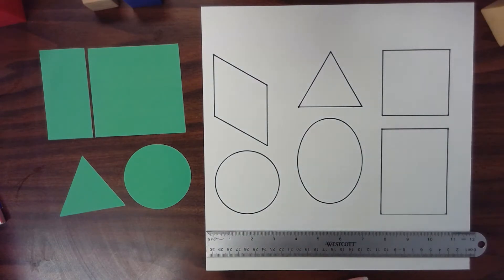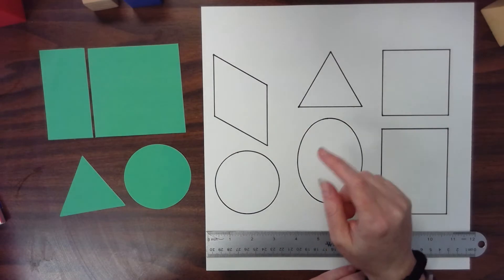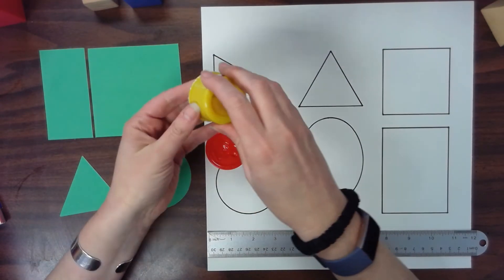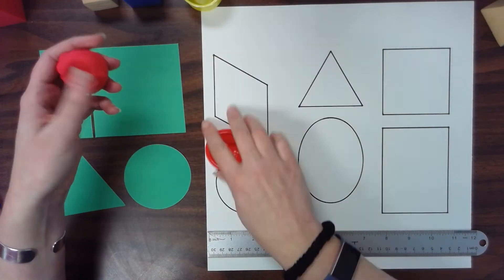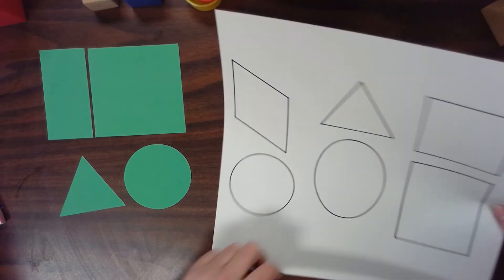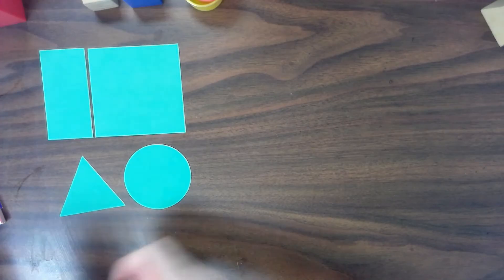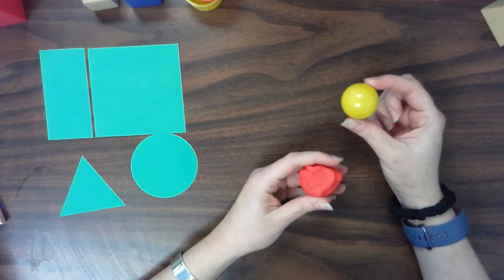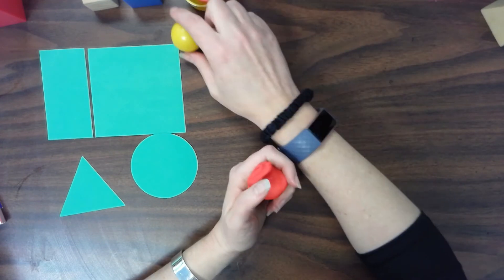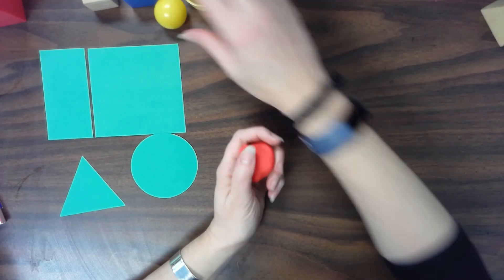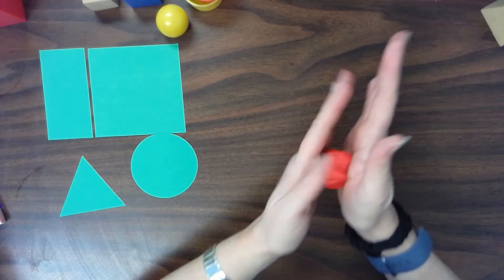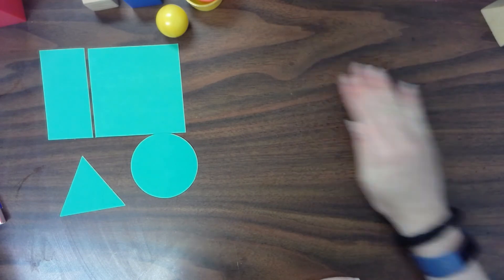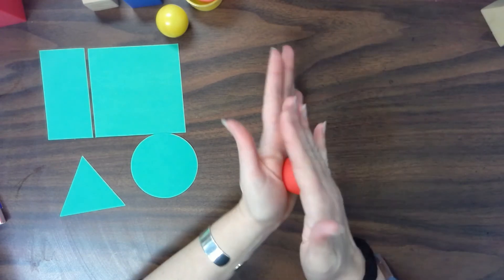Alright. So today I want you to try to make some 3D forms. Some shapes. Now I'm going to get some play-doh out. Here we go. Let's try to make some of our 3D shapes. Let's go easy first. Let's try to make a sphere. So I'm going to put my sphere right there. I'm going to take my play-doh and I'm going to roll it in my hands. Or you can roll it on a table.